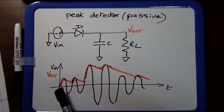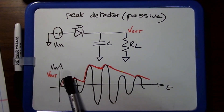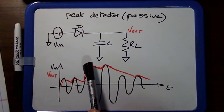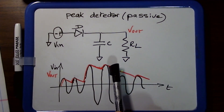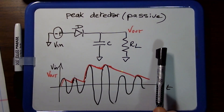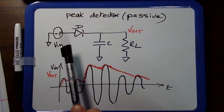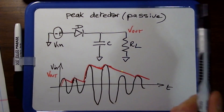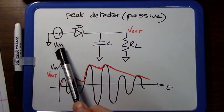If it was perfect behavior, the peak detector would not droop — it would go up and stay there. Then the rising sine wave would also stay at that level all the way. But the capacitor always discharges, so it droops, because this is the passive peak detector.